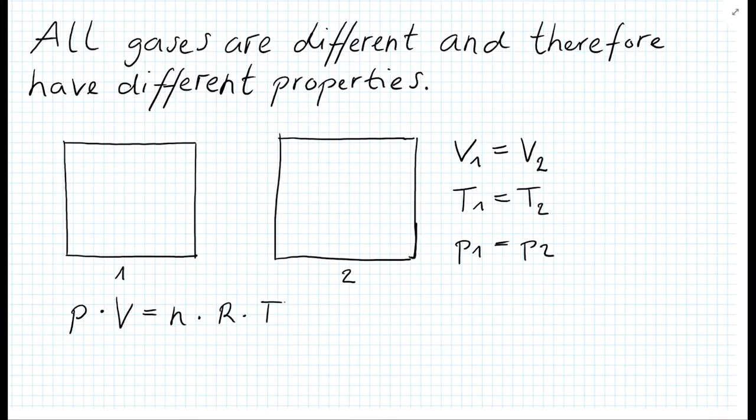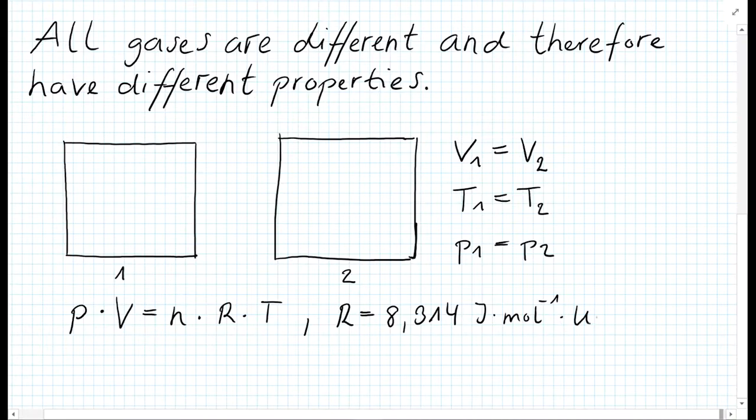where P is the absolute pressure, V is the volume, N is the number of moles of the gas, T is the temperature, and R is the gas constant. It has the same value for all gases, R equals 8.314 Joule per mole per Kelvin.